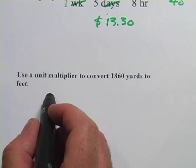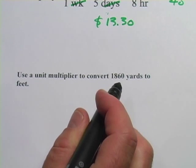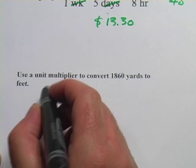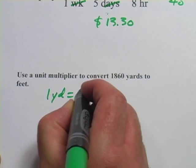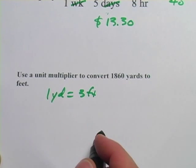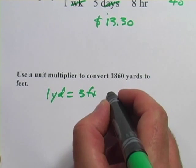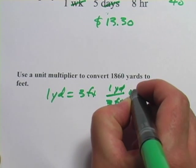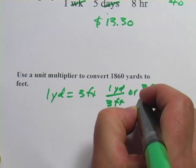Last one, it says use a unit multiplier to convert 1,860 yards to feet. So the fact you need to know is that one yard equals three feet, and then you can make unit multipliers out of that. You could put the yards on top and the feet on the bottom, or the feet on the top and the yards on the bottom.